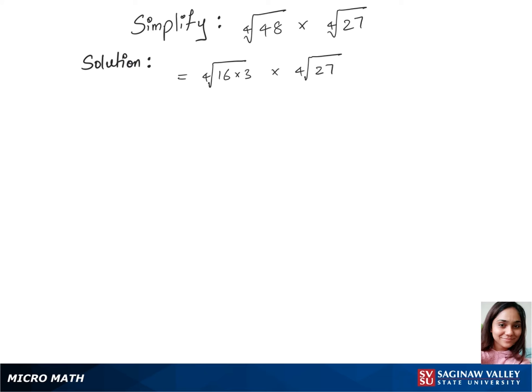In our next step, we'll separate the fourth root between 16 and 3, so that's fourth root of 16 times fourth root of 3 times fourth root of 27.